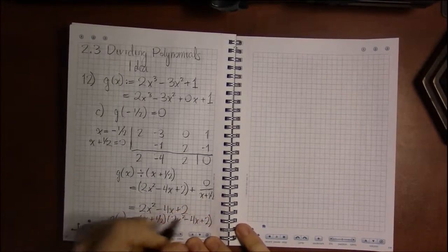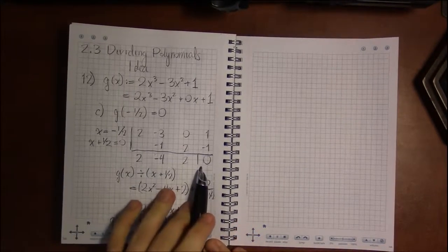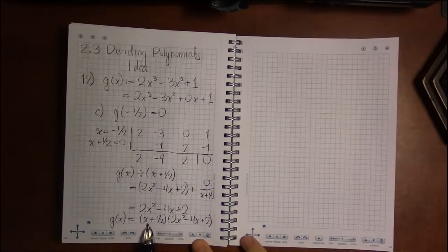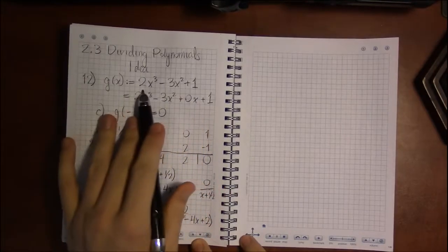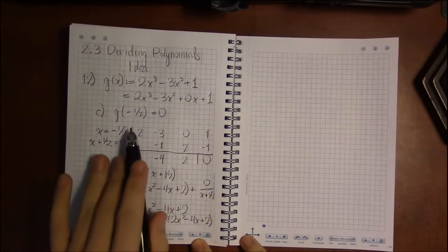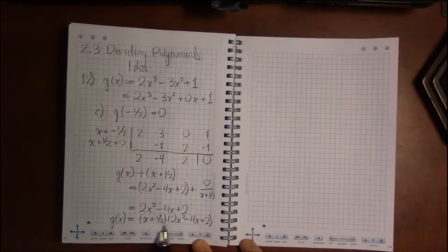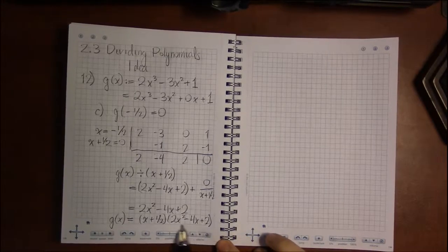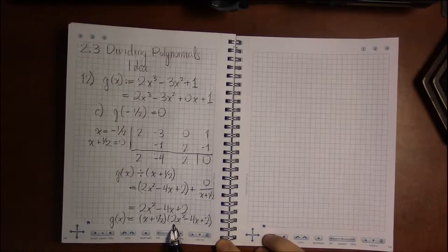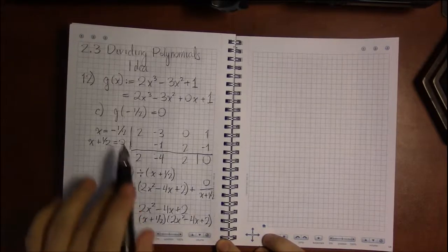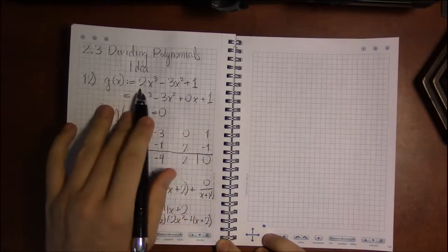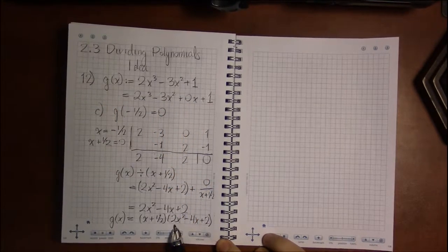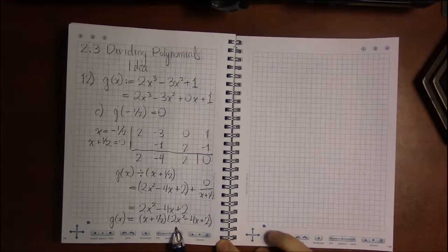This is what's so great about dividing polynomials and finding roots. I started with a cubic, found one 0, and factored it out. What I'm left with now is quadratic. If I wanted to find the other x-intercepts, the other 0s of this, all I would have to do is set this quadratic equal to 0 and solve.